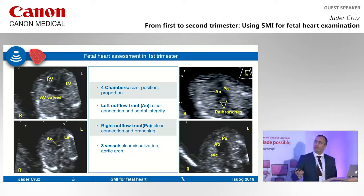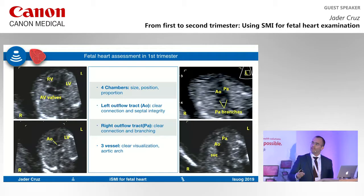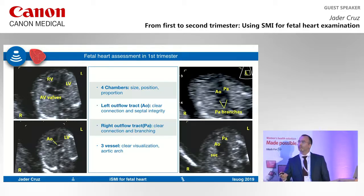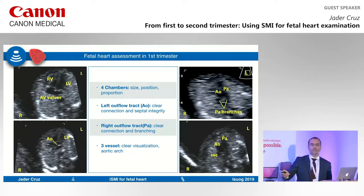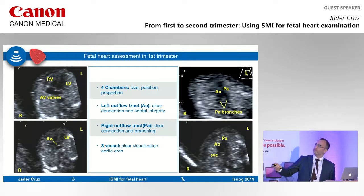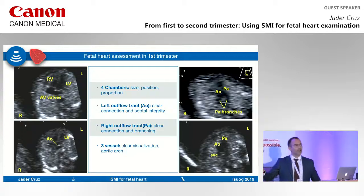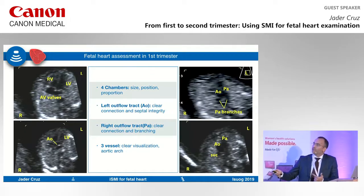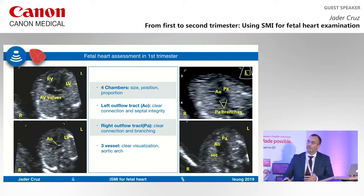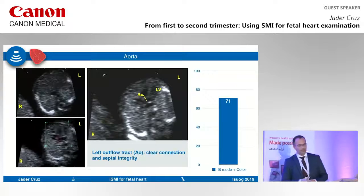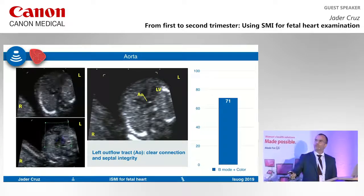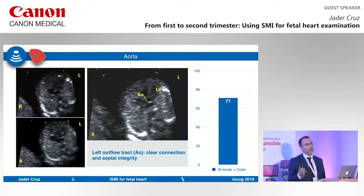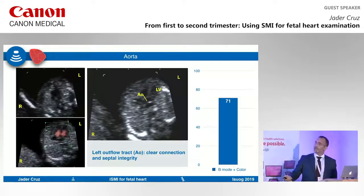We started looking in the first trimester with a similar protocol to the second trimester: four-chamber view, AV valve, interventricular septum, position, and proportion of the two sides. Then we move to outflow tracts — the left outflow tract, the connection between the left ventricle and aorta, pulmonary arteries with branching, and the three-vessel view with pulmonary artery, aorta, and superior vena cava. The study is a simple comparison between B-mode with high-definition Doppler versus SMI.